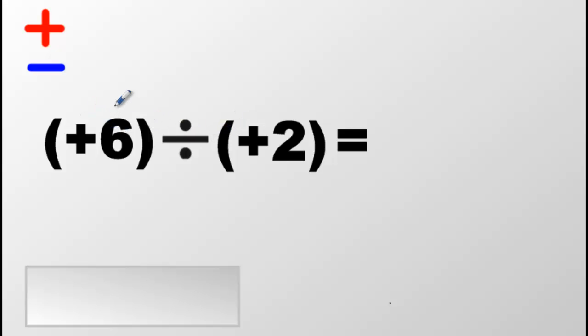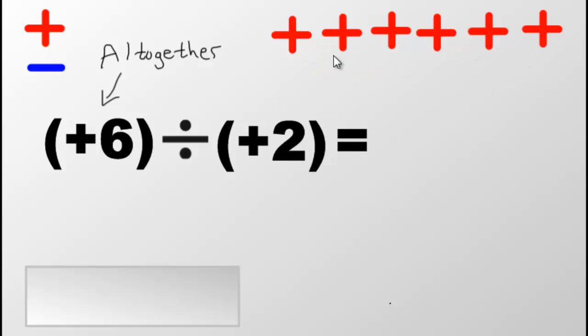The first number in a division equation - remember this, the first number you see, and this is always true - stands for how many things you have all together. We have six positive things, so that is all we are allowed to use. We cannot use more, we cannot use less, we have exactly six positive things that we are allowed to play with. That's all the toys we get.